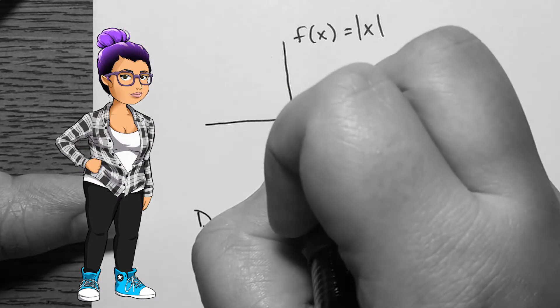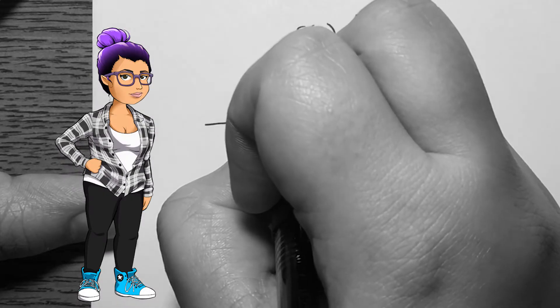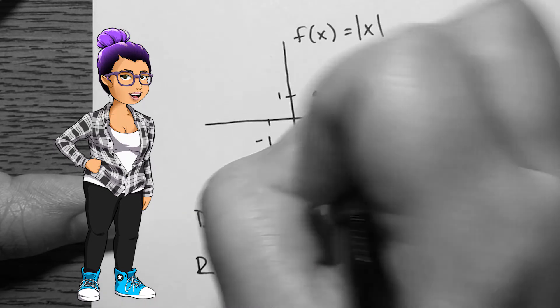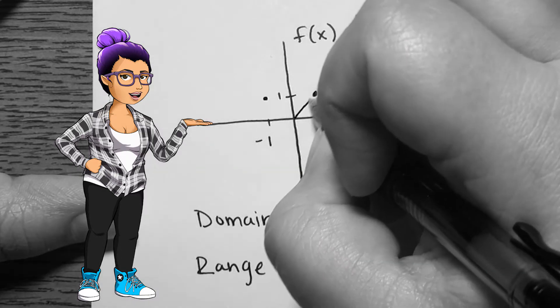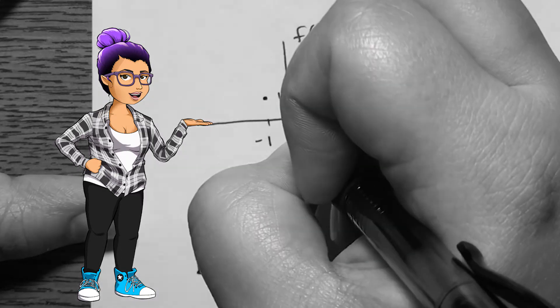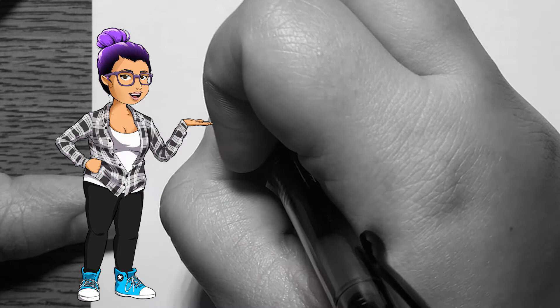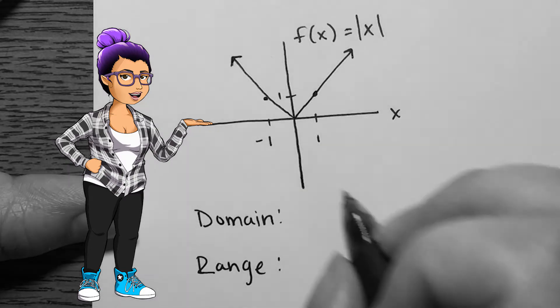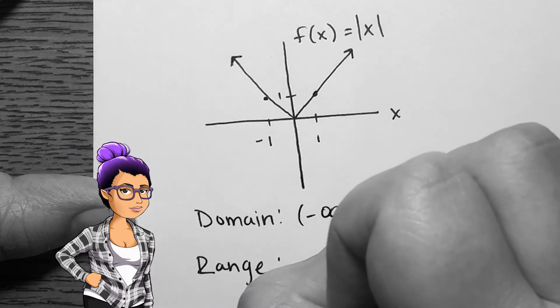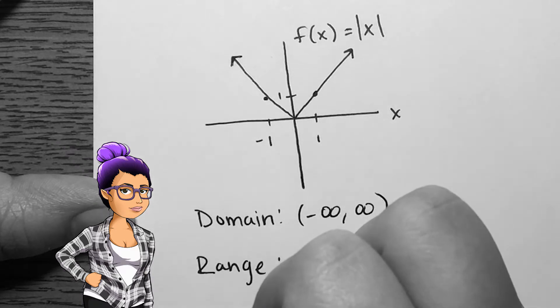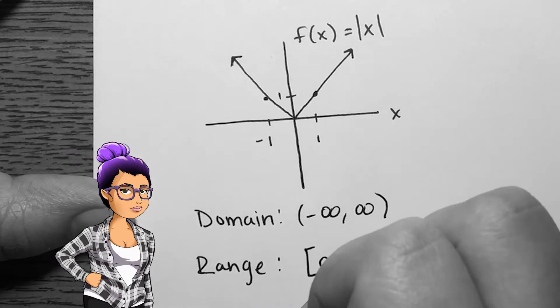The absolute value function can be written as f of x equals x with bars surrounding it. Whatever x value goes in has the positive version come out. The result, on the right half, is a line like the identity function. The left half does not go into the negative outputs, though, and the entire graph looks like the letter v. The domain is all real numbers and the range is everything greater than or equal to zero.